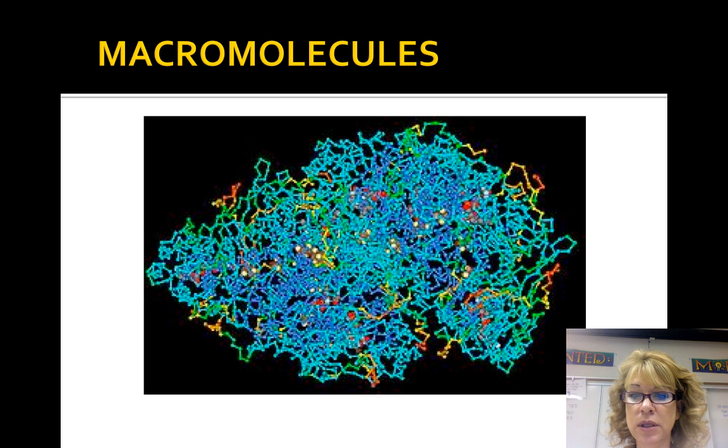Many of the organic molecules in nature are gigantic. Macromolecules are giant molecules in a living organism. For example, proteins, polysaccharides, nucleic acids are all macromolecules. They may contain thousands of covalently bonded atoms.